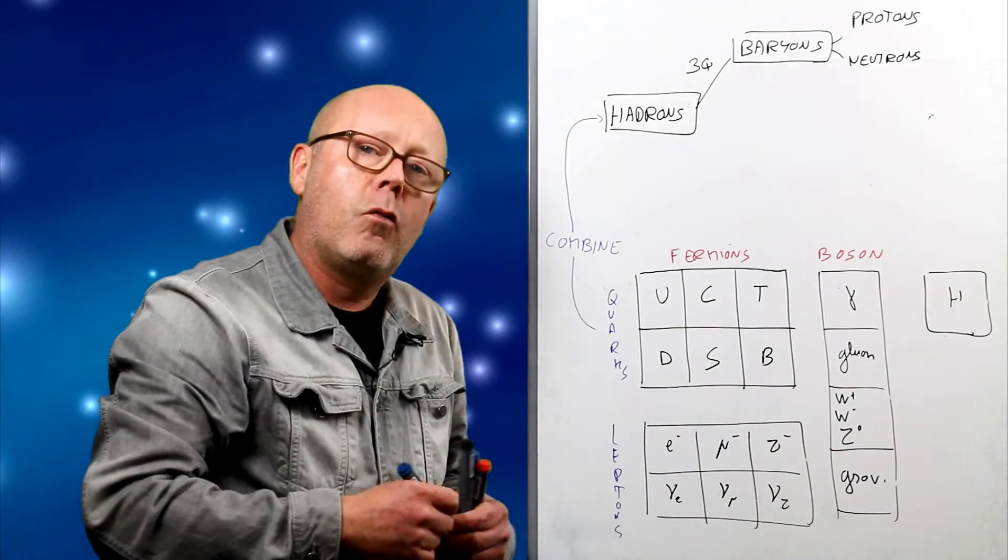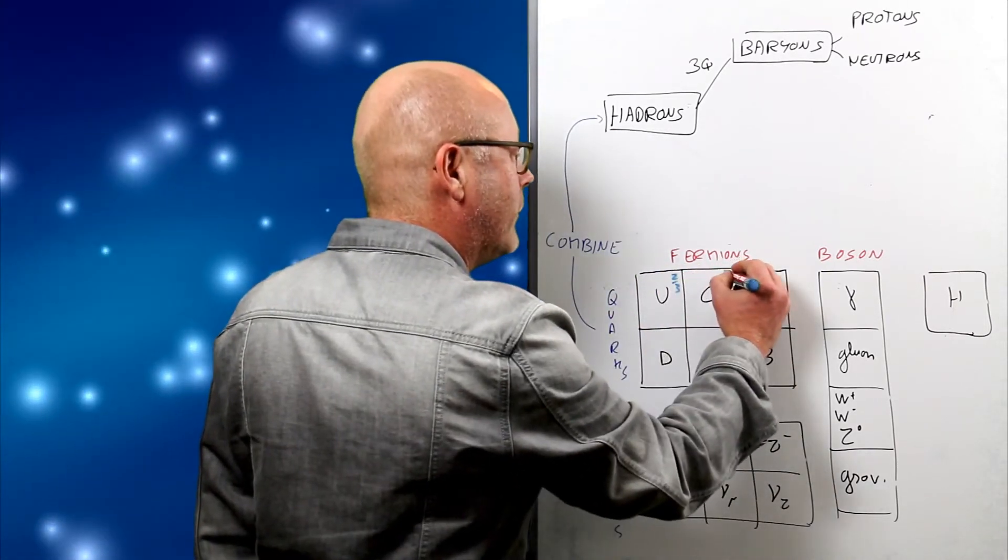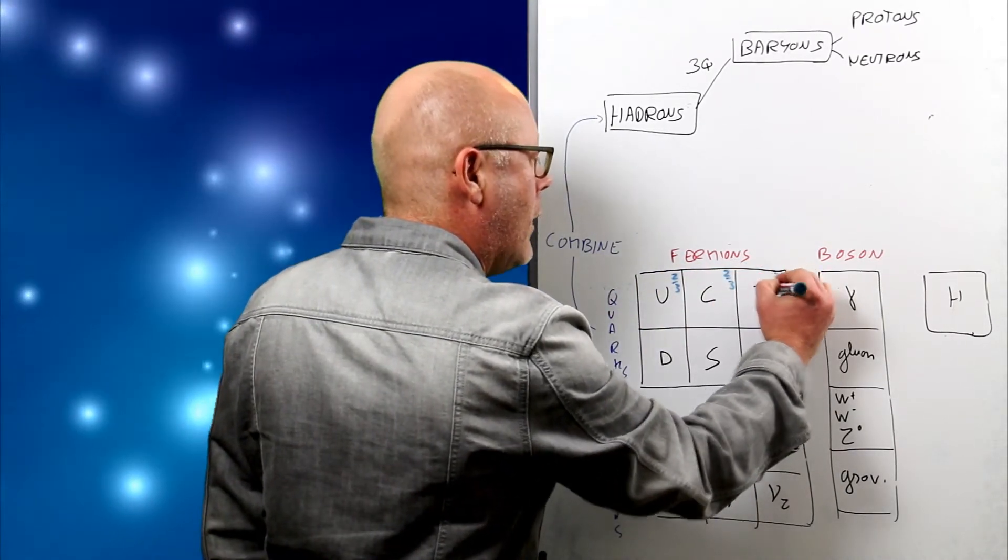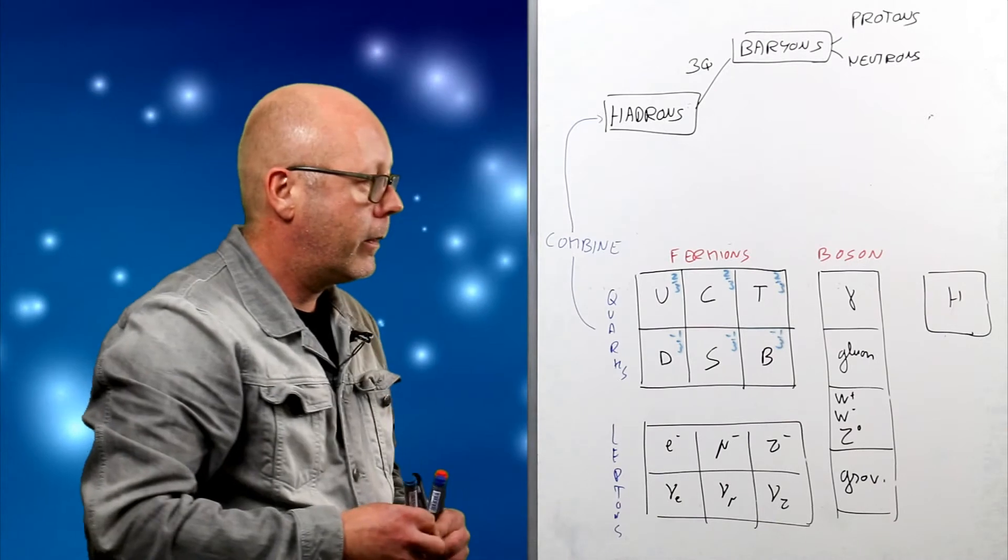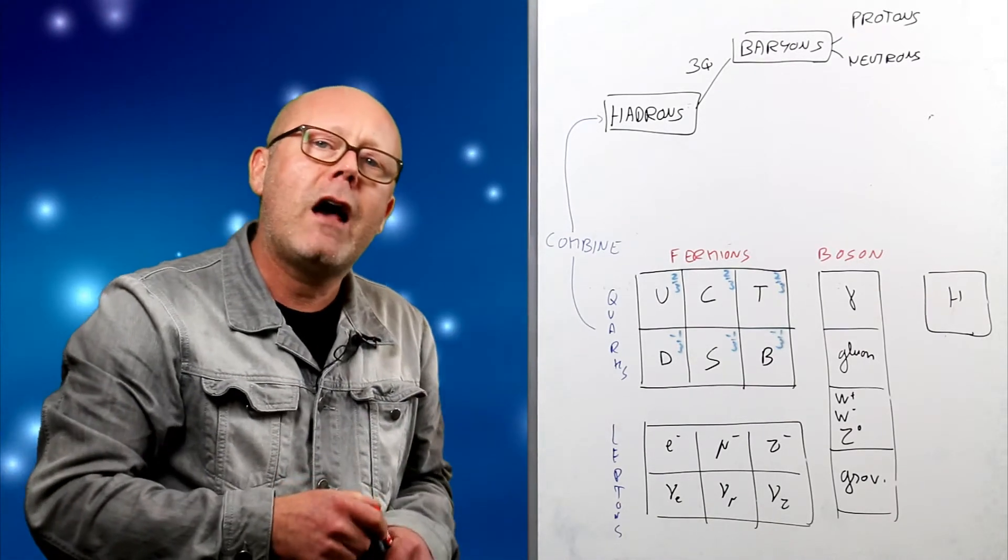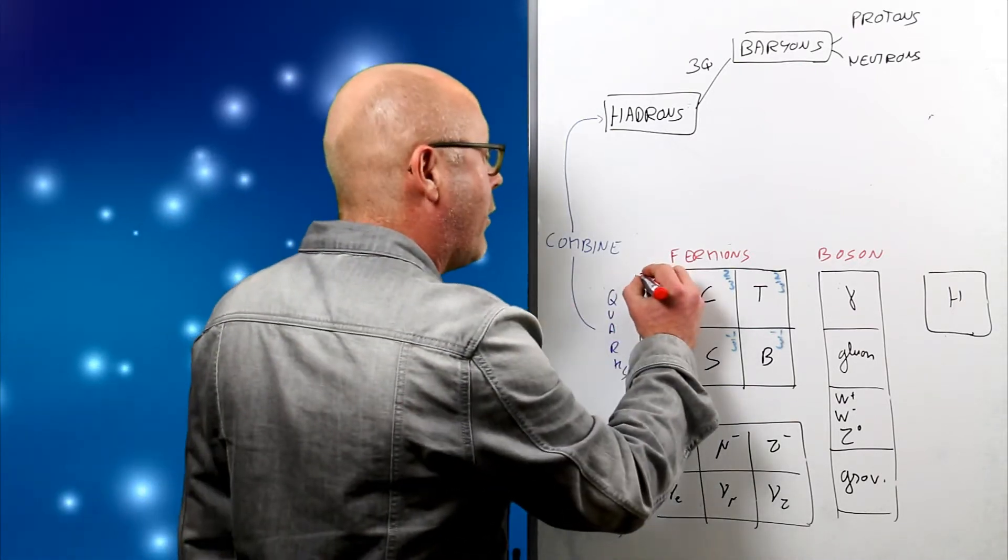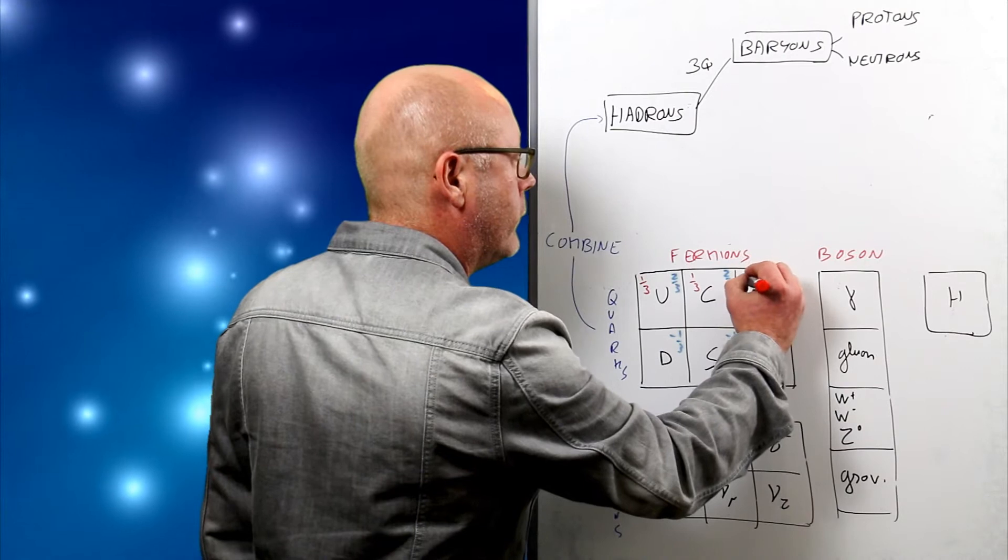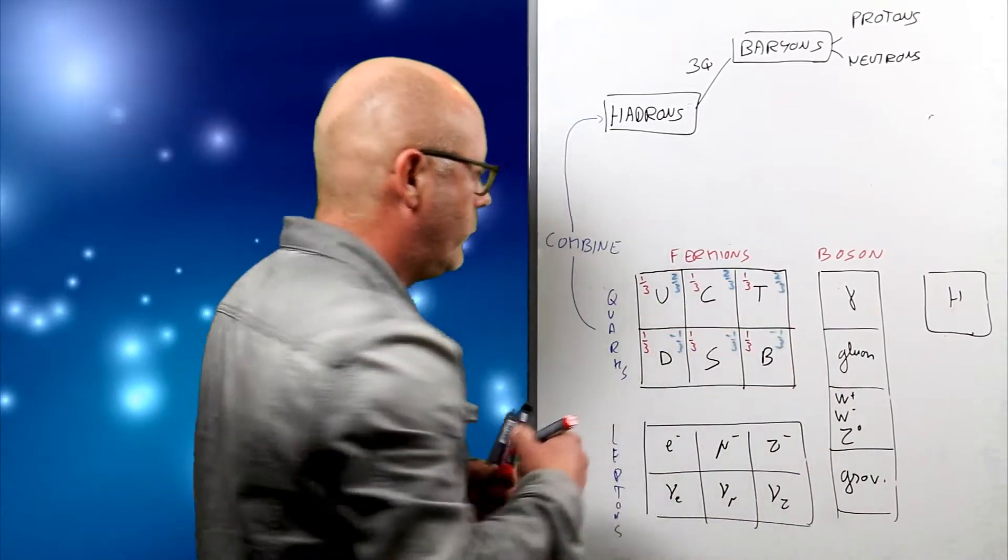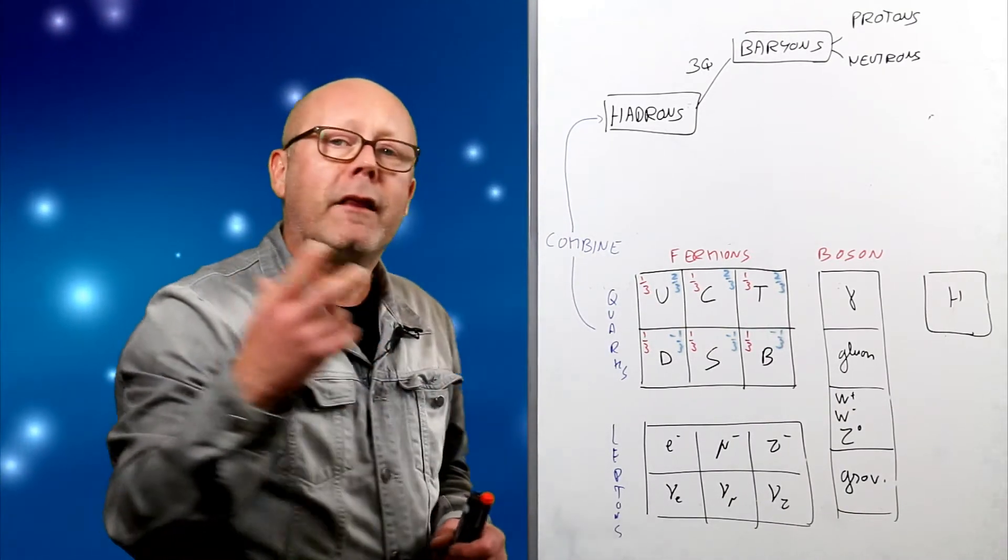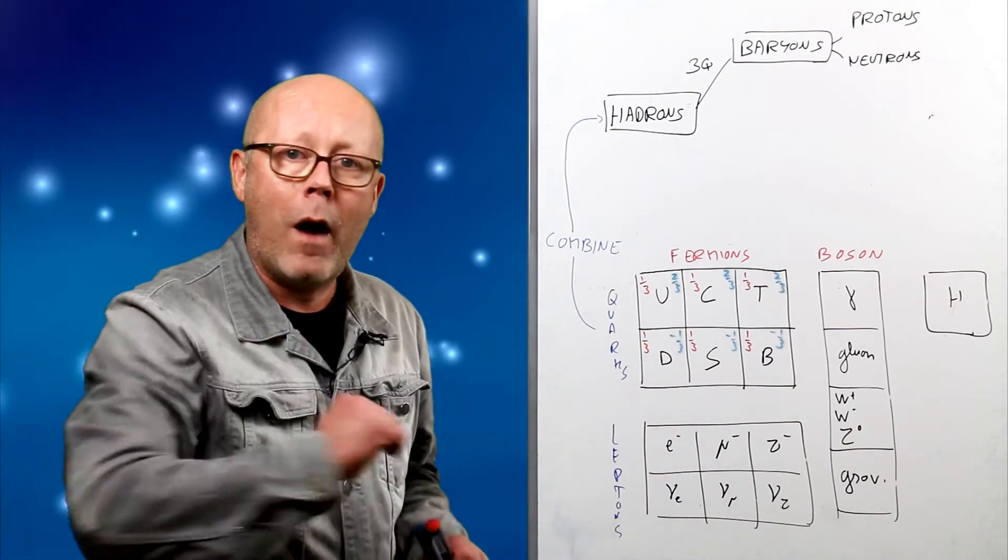We have seen that quarks have electric charges: two thirds for the happy ones and minus one third for the depressed ones. They also have something called a baryon number, which is one third for all of them. So when you combine three of them, you get one third plus one third plus one third, one baryon.